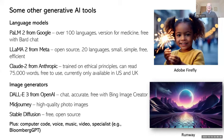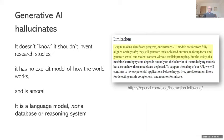That's the current state of the art. However, generative AI hallucinates — that's the term used for occasionally producing errors. The reason for that is that it doesn't know, for example, that it shouldn't invent research studies or make up academic references. It has no explicit model of how the world works. In human terms, it's amoral. It's a language model, a language generating system — not a database or a reasoning system, although it is now being connected up to databases. The OpenAI company are very clear and explicit about that.